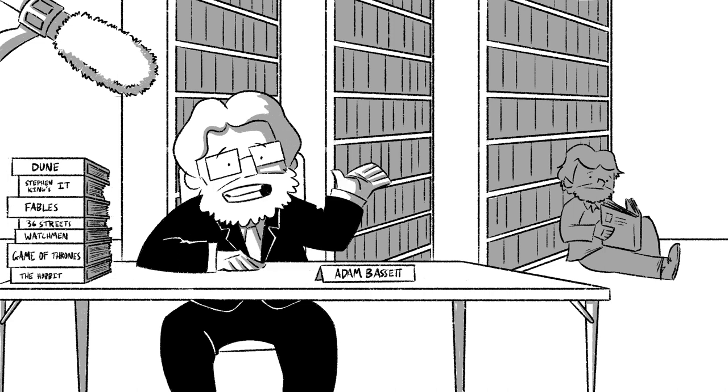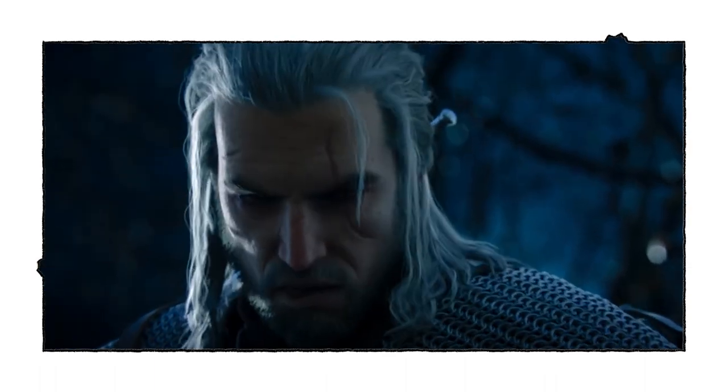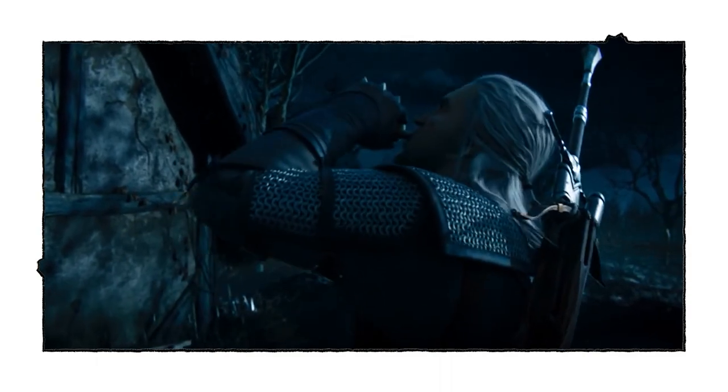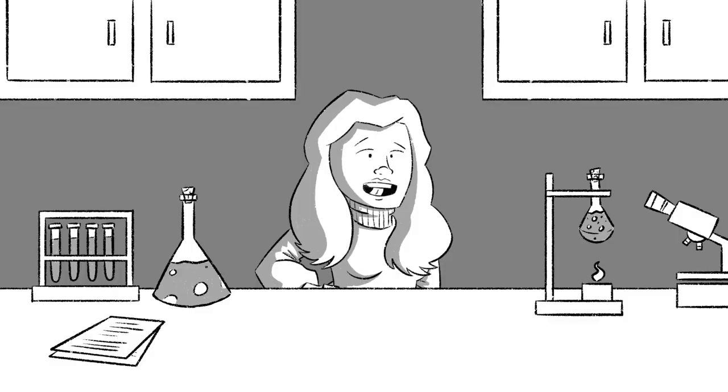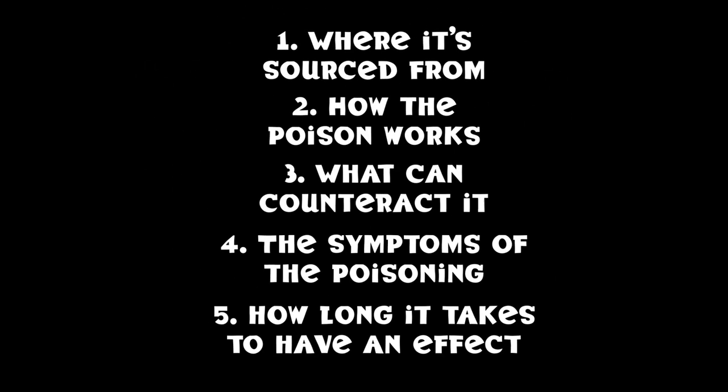If none of these work for you, the best call may be to invent your own poisons for your story. There's a ton of resources about the medicinal and toxic properties of plants to draw upon. You can even take existing material and adjust it to fit your setting, like how The Witcher uses plants like wolfsbane and mistletoe as ingredients for potions and oils against ghouls, hags, and wraiths. There are five key points to think about when creating a poison: where it's sourced from, how it works, what can counteract it, what the symptoms are, and how long it takes to have an effect. Figure those out and you've got plenty of world-building texture to sprinkle into your story.